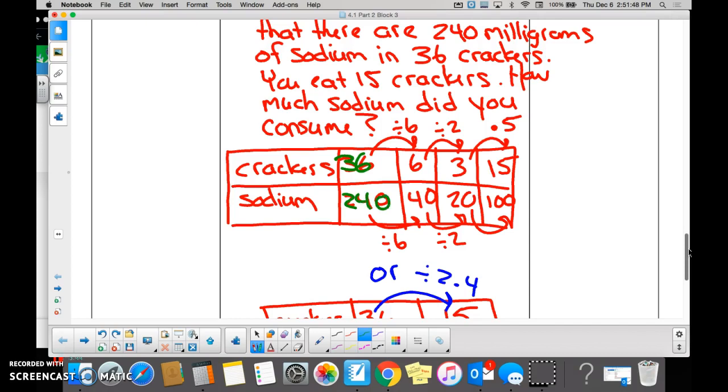And I believe, who was this one again? Who did this ratio table? Kelsey. Kelsey said, well I know I need to get to 15 and I cannot really get to 15 easily from the number 36.